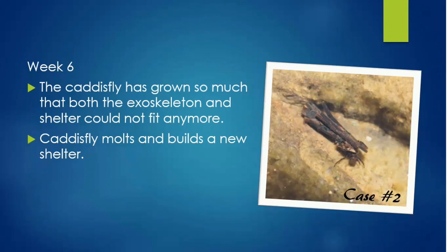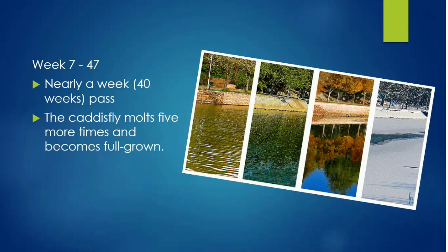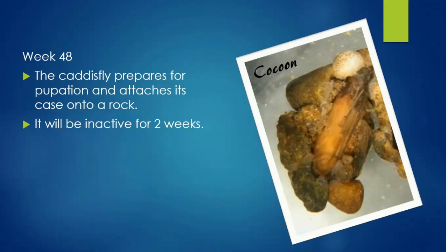The caddisfly grows every week and eventually outgrows its case and its exoskeleton. The caddisfly molts the exoskeleton and builds a new case. The seasons pass and the caddisfly continues to grow, molting and building a new case as needed. In September, the caddisfly forms a pupa and attaches to a rock, staying in its pupa for two weeks, changing from larva to adult.